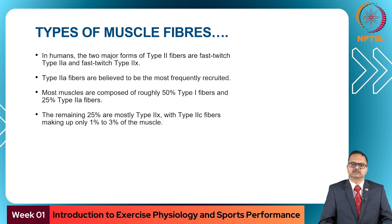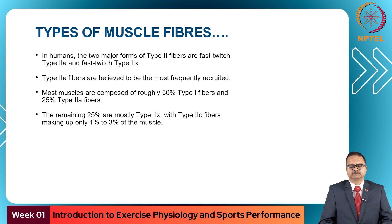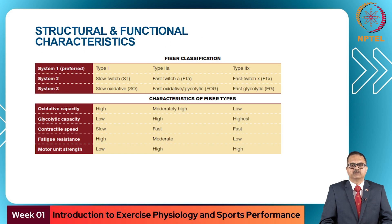In humans, there are two major forms of type 2 fibers: type 2a and type 2x. Type 2a fibers are believed to be the most frequently recruited. Most muscles are composed of roughly 50% type 1 fibers, 25% type 2a fibers, and the remaining 25% are mostly type 2x, with a rare type 2c making up only 1 to 3 percent. They are also called slow twitch, fast twitch a, and fast twitch x, or alternatively slow oxidative, fast oxidative glycolytic, and fast glycolytic.